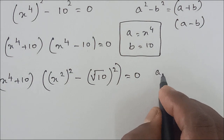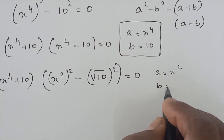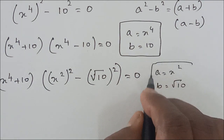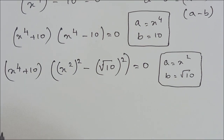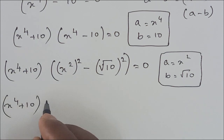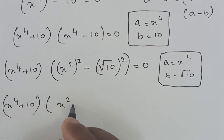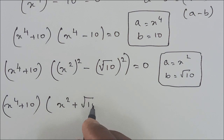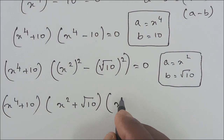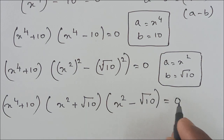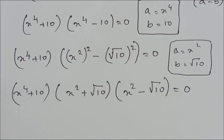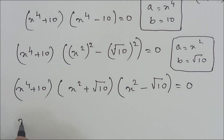This is again of the form a^2 minus b^2, where a equals x^2 and b equals √10. Applying the formula again gives: (x^4 + 10)(x^2 + √10)(x^2 - √10) equals zero.